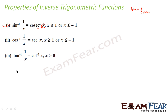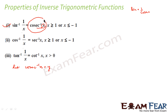To prove that sin⁻¹(1/x) = cosec⁻¹(x), assume cosec⁻¹(x) = y. Then cosec(y) = x.